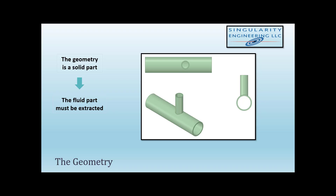This is the geometry I'm going to use for this video. As you can see, this is a solid geometry. We have to extract the fluid part. This can be done in SpaceClaim, but it can also be done from Fluent Meshing. In this video, I'm going to explain how to do that inside Fluent Meshing.